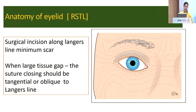Another important thing is the relaxed skin tension line, also known as Langer's line. This is the muscle tension line, and the importance of this is if we give an incision along or parallel to Langer's line, there will be minimum scarring. When there is a large tissue gap, the suture closing should be tangential or oblique to the Langer's line.